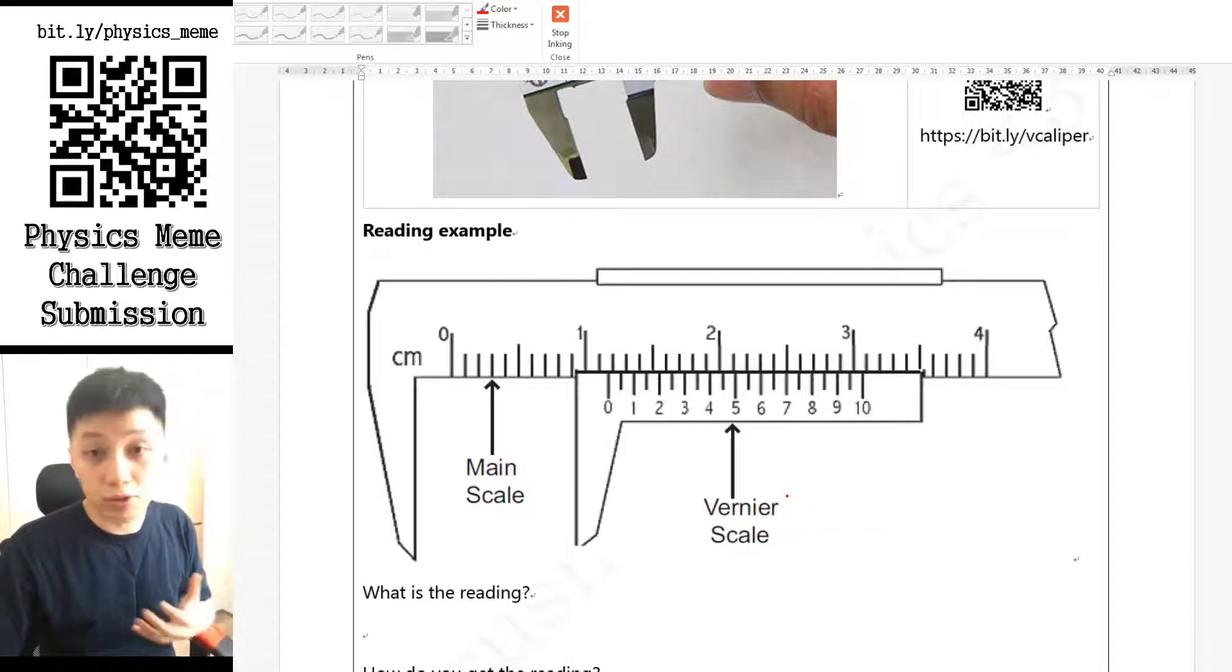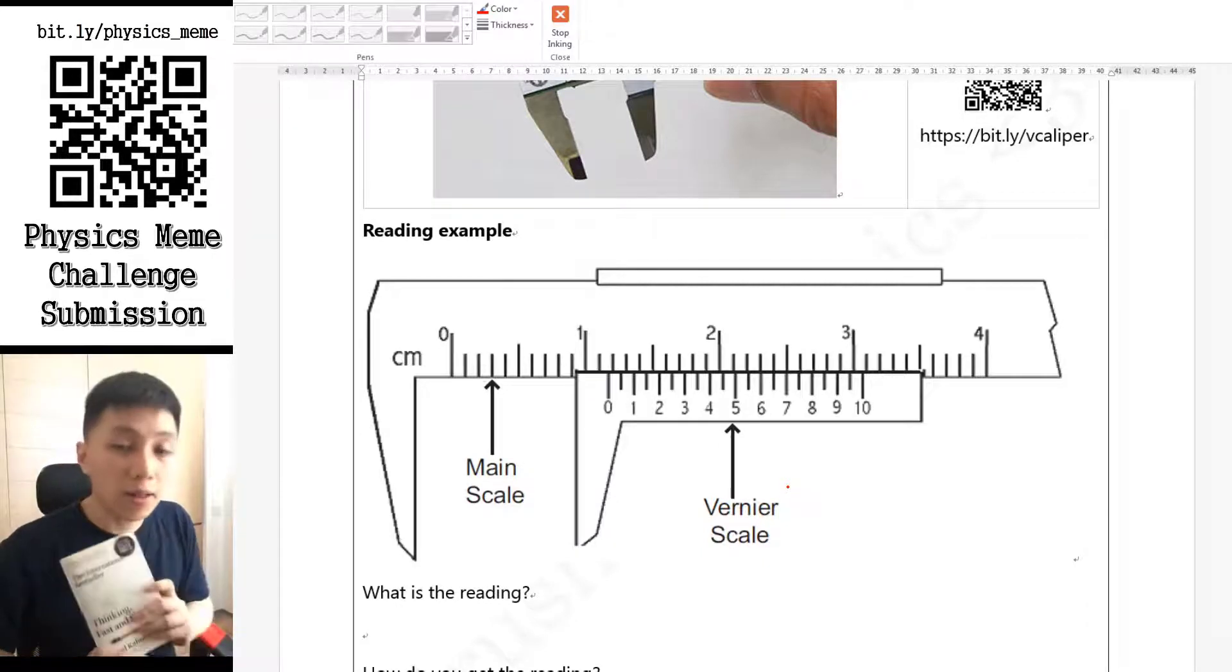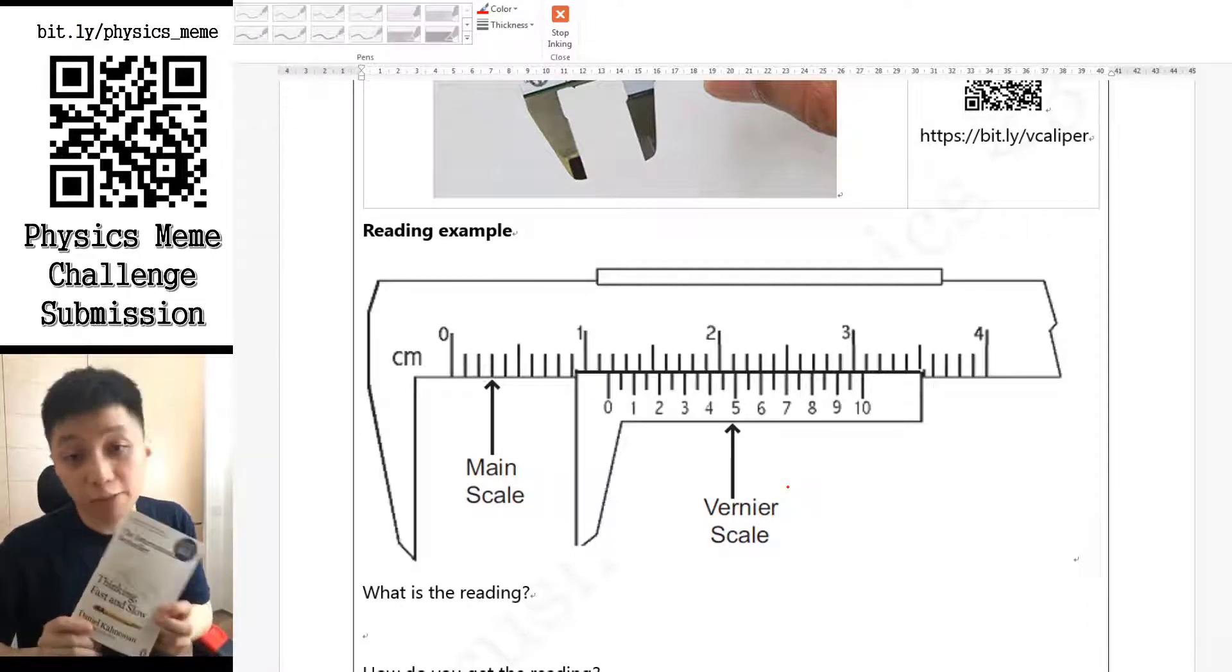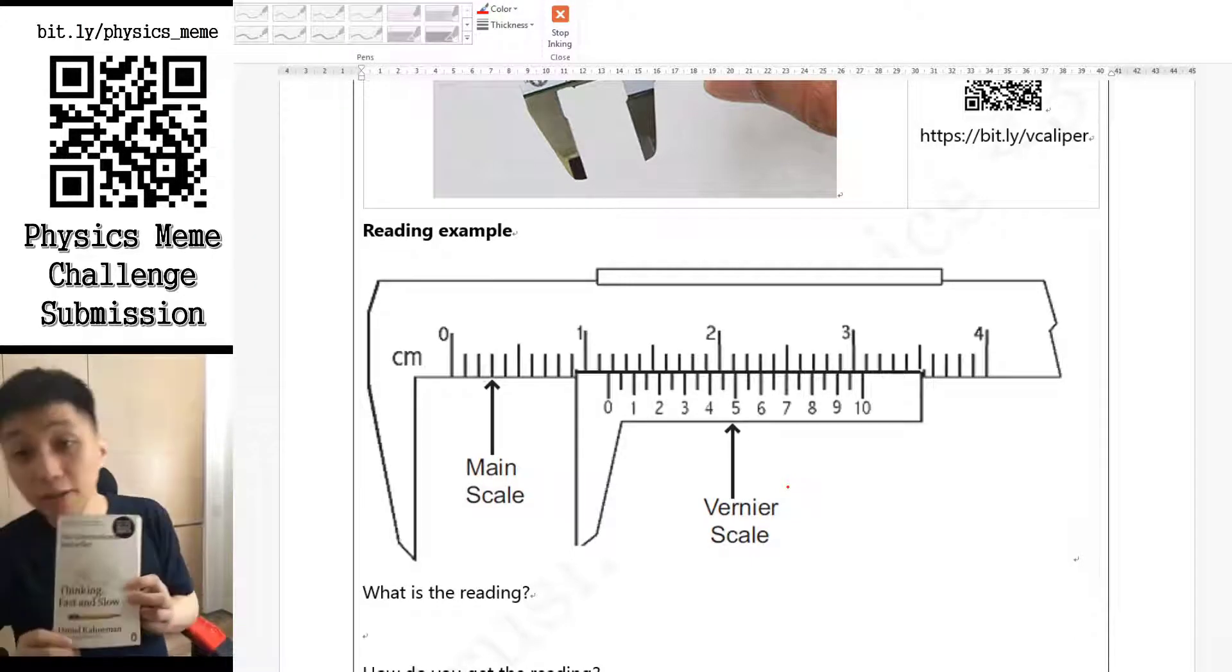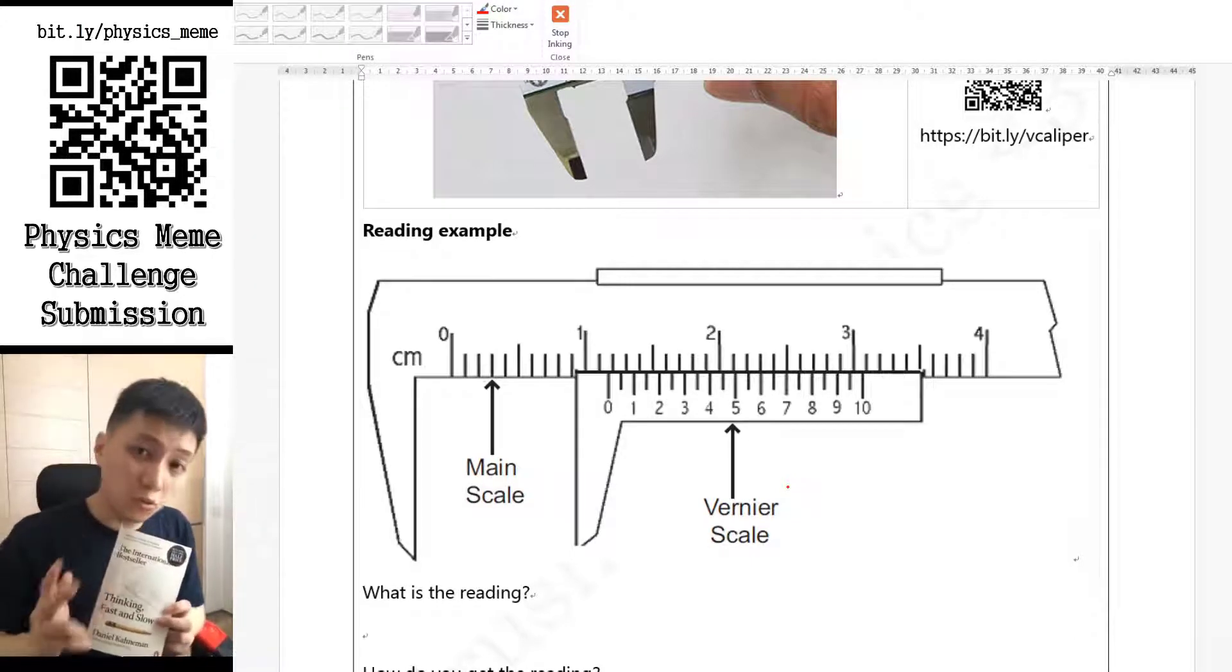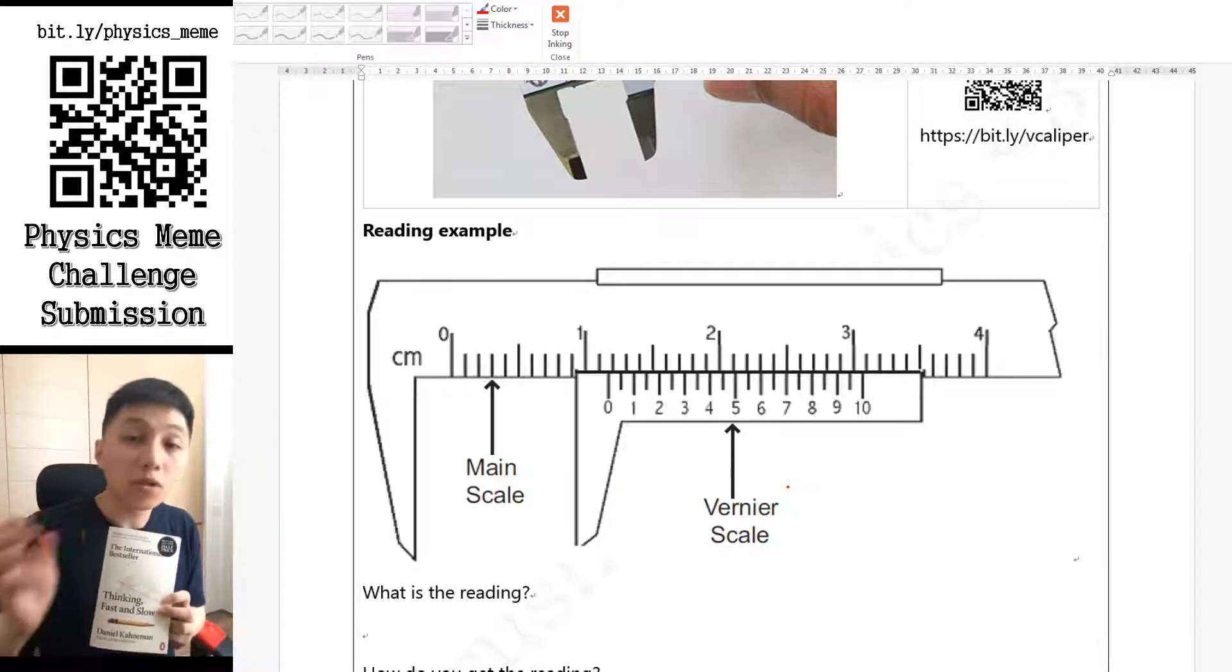I recently read a book, I'm still reading it, but some ideas that I've got from this book called Thinking Fast and Slow by Daniel Kahneman is that there are two ways of thinking in your brain. One is called System 1, one is called System 2.